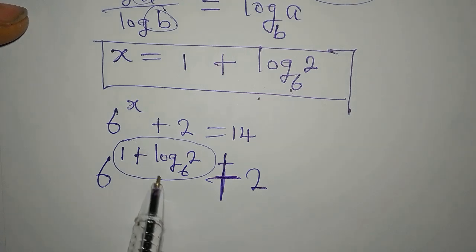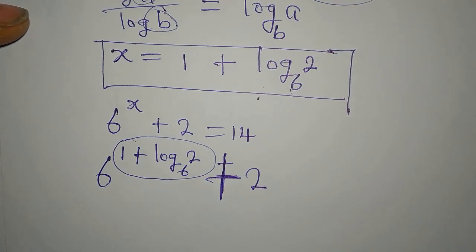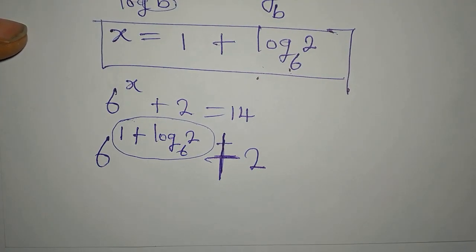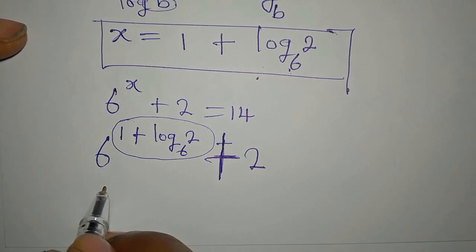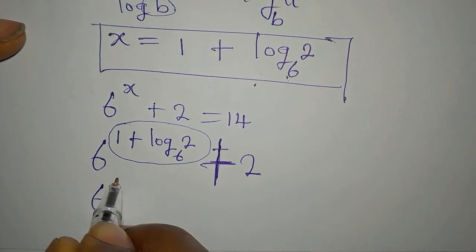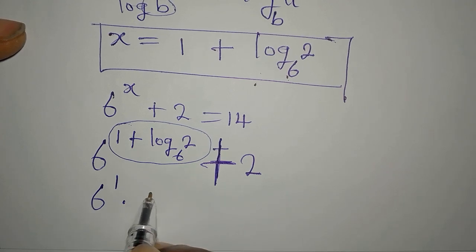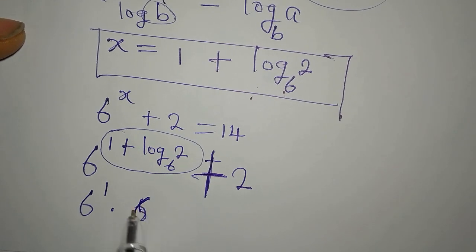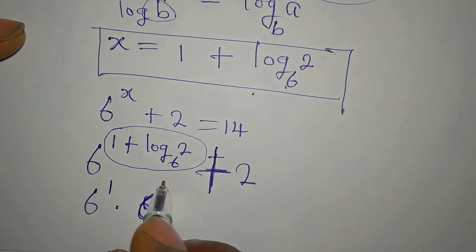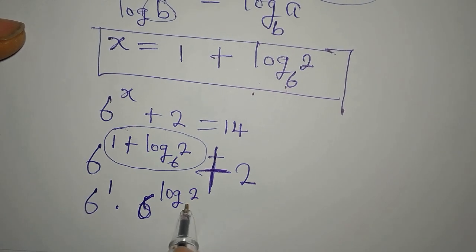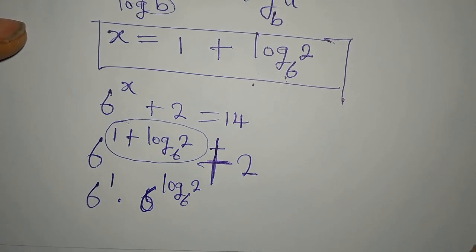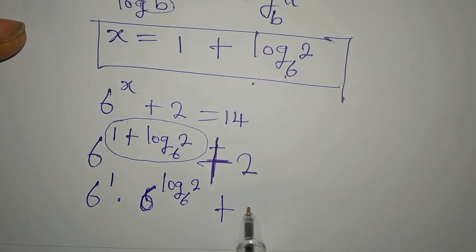From here, remember that this is the power to 6. And we can apply one law of indices. This is the same thing as 6 to the power of 1 multiplied by 6 to the power of log 2 to base 6, and then we have everything plus 2.